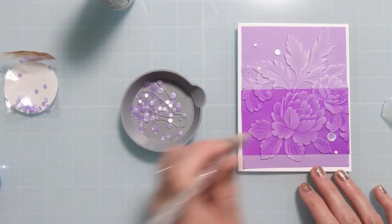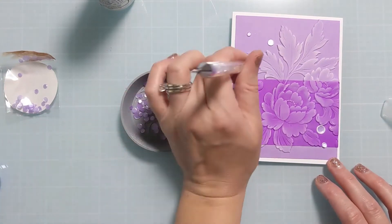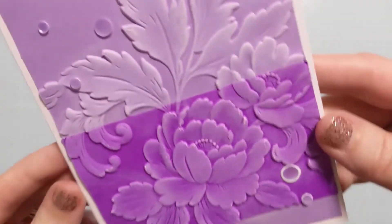So I'm going to go in odd numbers. Three on the top, two on the bottom. I have my jewel picker tool and my Barely Art glue and that's going to finish the card.